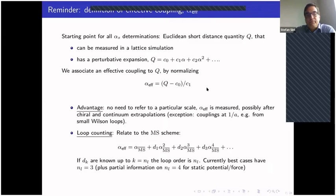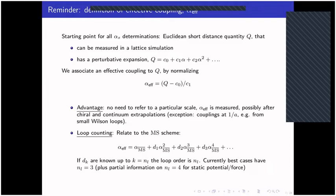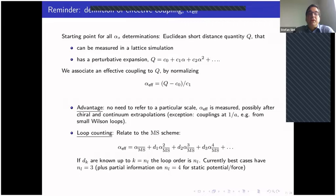The advantage of this alpha_effective is that there is no need to refer to a particular scale — alpha_effective is just the observable normalized such that it equals some coupling in perturbation theory. An exception would be couplings defined at one-over-a from small Wilson loops, but there has been no new development on Wilson loops and couplings defined at the cutoff scale since 2019, so I won't discuss those.